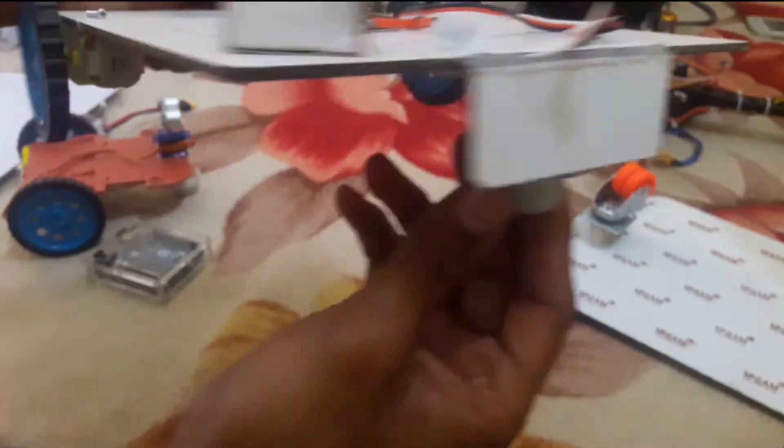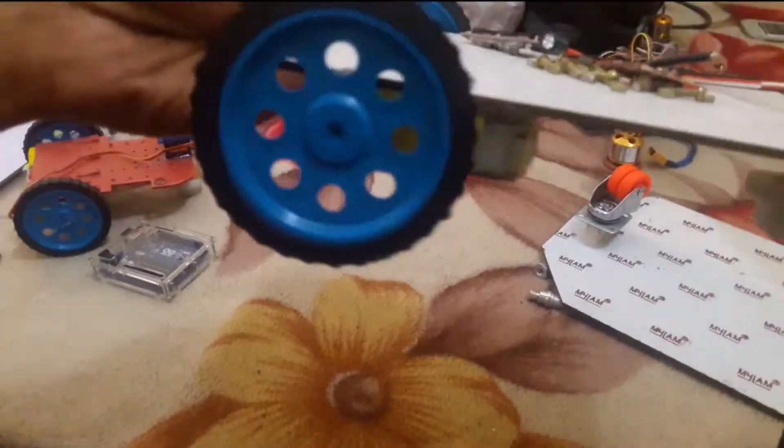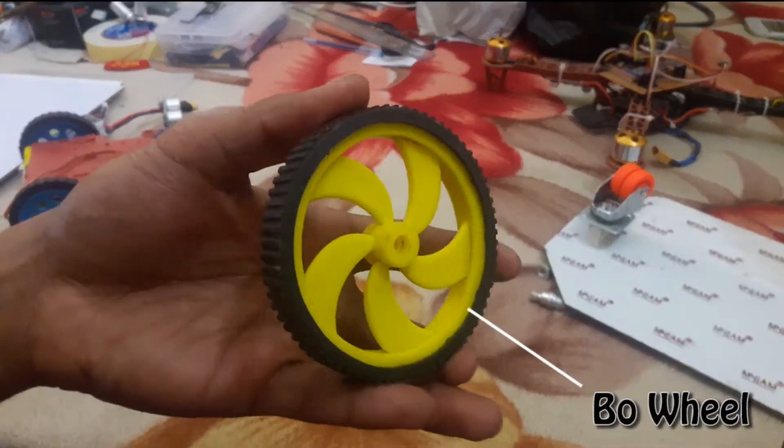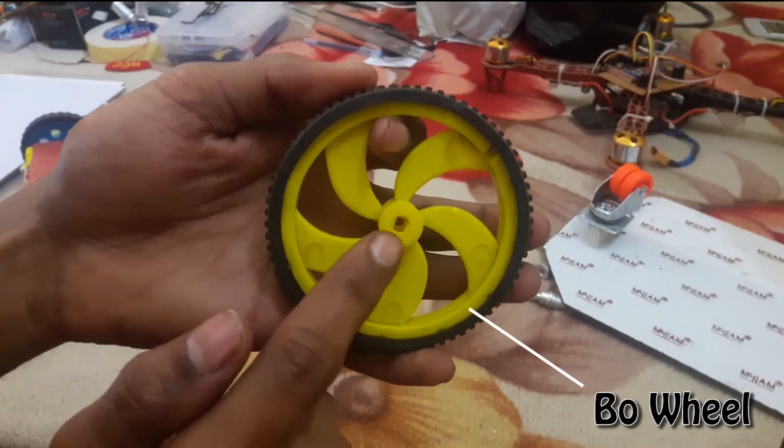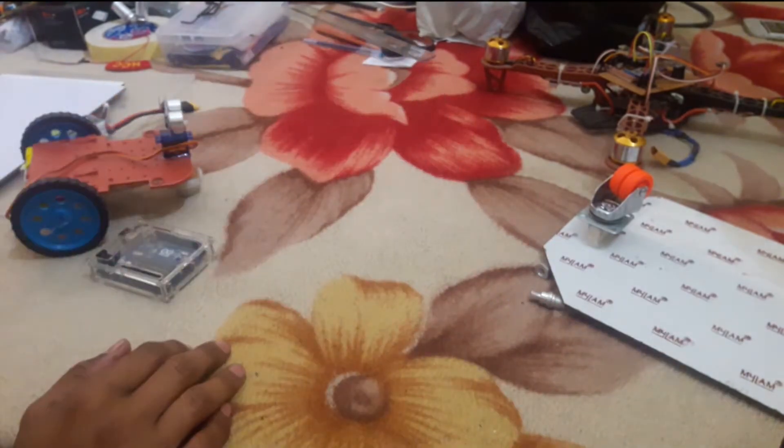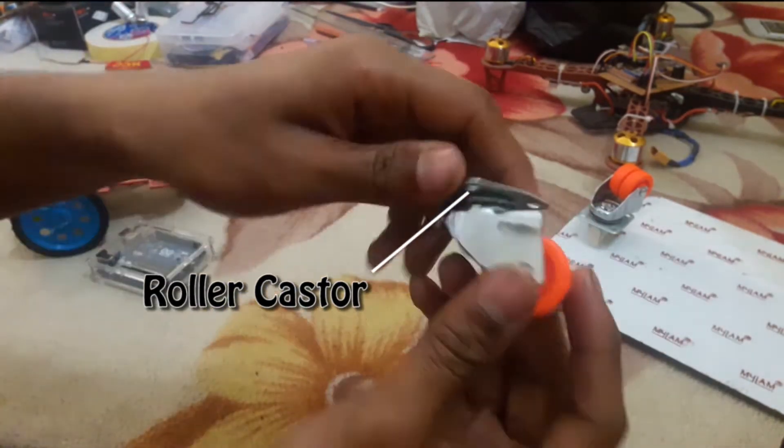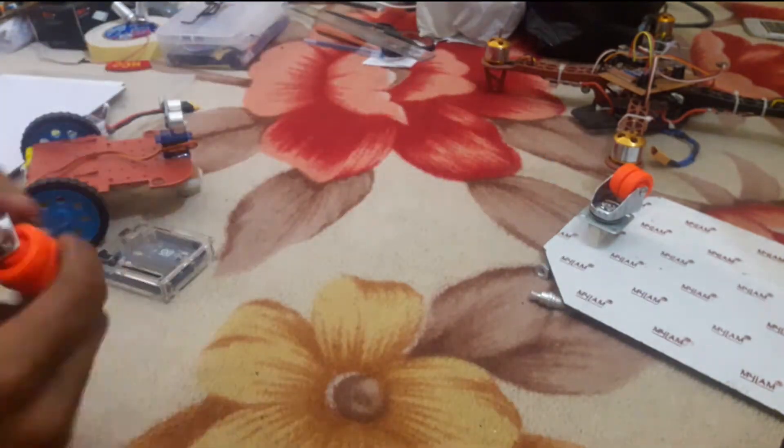Let's see a soft wheel with BO motor slot, and this is a roller caster wheel you can use in any project.